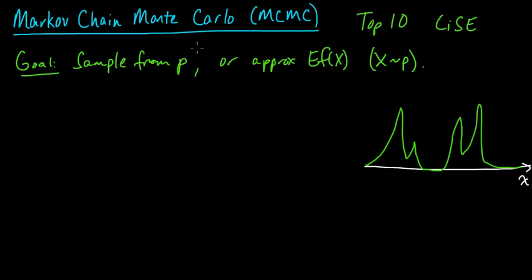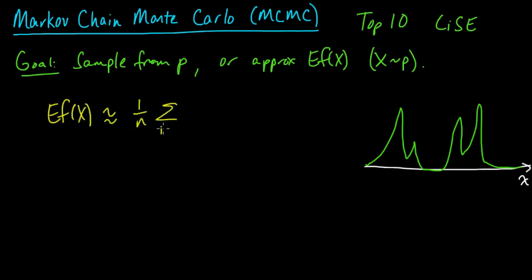We talked about standard basic Monte Carlo, which was to approximate this expected value by computing a sample mean where these x_i's were drawn i.i.d. according to this distribution P.